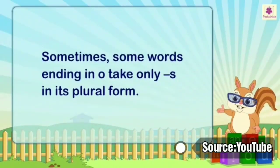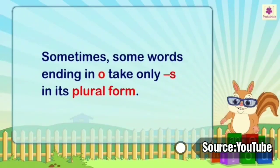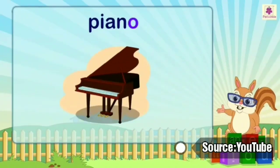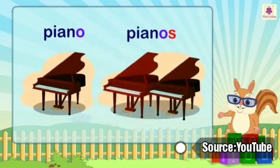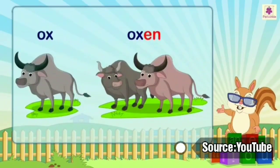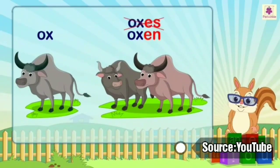Sometimes, some words ending in O take only S in their plural form. For example: piano → pianos. Also note that the plural of ox is oxen, not oxes.